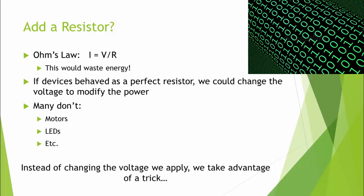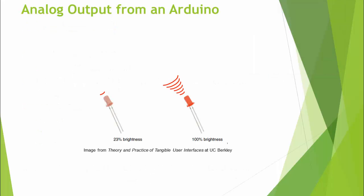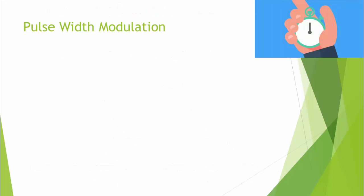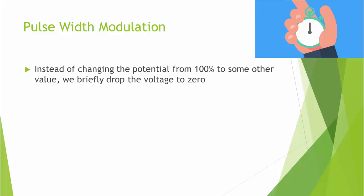What's the solution? Instead of changing the voltage, instead of applying a resistor, we use a different trick. To get analog output from an Arduino — to have our digital device produce analog output — rather than changing the potential or the resistance, we look at the time aspect. Remember, it's joules per second. We're going to use the time aspect to vary our power output. This is where something called pulse width modulation comes in.